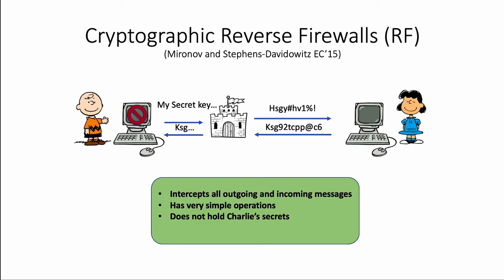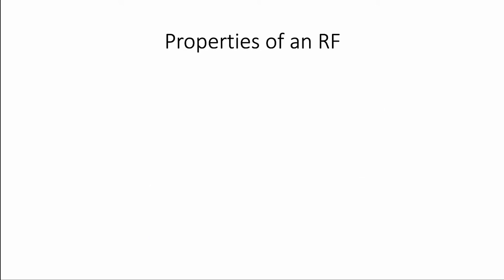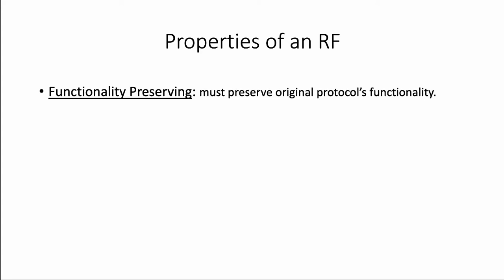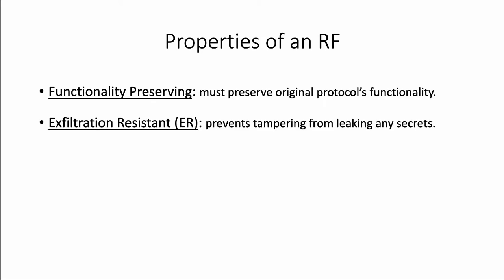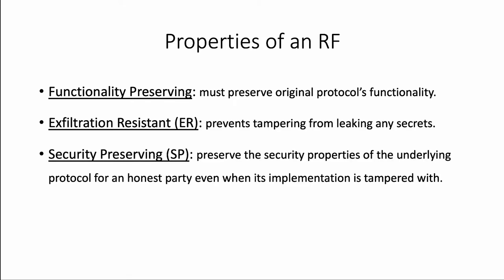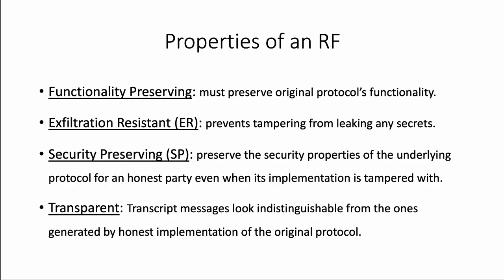You can think of a firewall as software provided by an external party whose code can be trusted. One of the objectives while designing an RF is to keep its operations very simple so that the code can be tested and verified before using it. Moreover, it is not like we are shifting our trust to the RF, as we do not allow the RF to hold any of Charlie's secrets. It is allowed to keep its own internal state, and it only gets to act on the transcript messages. The security properties we want from an RF are: functionality-preserving, exfiltration-resistant, security-preserving, and transparent — meaning the transcript messages should look indistinguishable from those generated by an honest implementation.